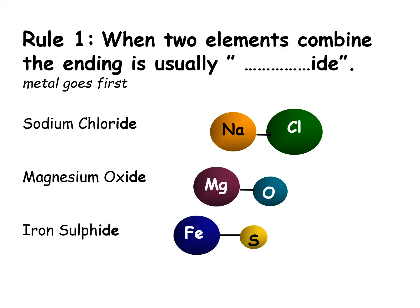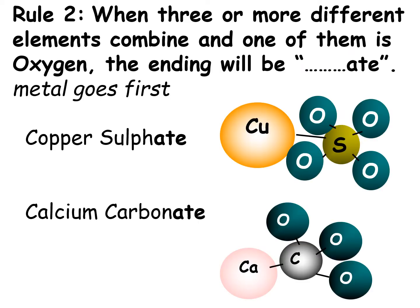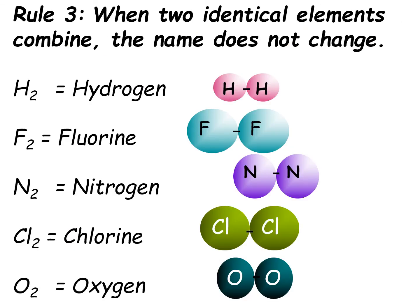Rule number one: when two elements combine, the ending is usually '-ide'. Examples: sodium chloride, magnesium oxide, iron sulfide. Rule number two: when three or more different elements combine and one of them is oxygen, the ending will be '-ate'. The metal goes first. Examples: copper sulfate, calcium carbonate. Rule number three: when two identical elements combine, the name does not change. Examples: hydrogen, chlorine, nitrogen, and oxygen.